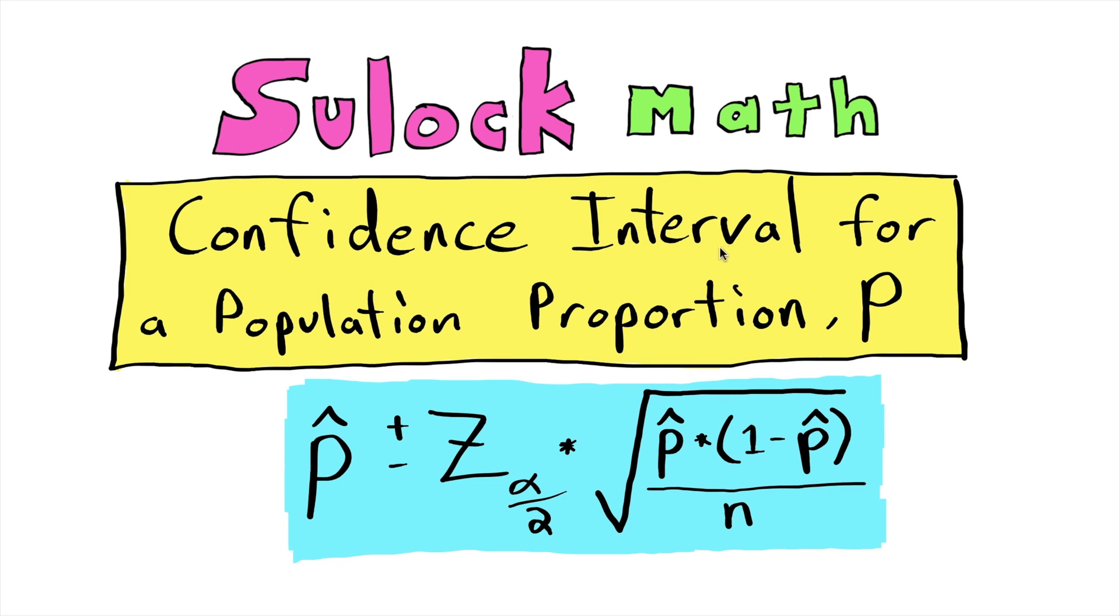Hello, this is Michael Sulock. In this video we're going to be making a confidence interval for a population proportion. We'll be doing it by hand using this formula right here. Let's jump right in and look at our problem.